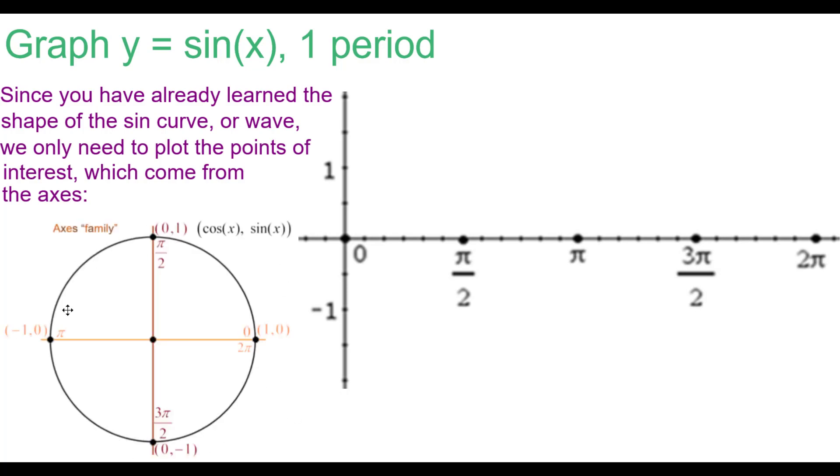Here's the axis family. The sine of 0 is 0, so the ordered pair will plot as 0, 0. The sine of π over 2 is 1, the second coordinate of that point is 1, so π over 2 comma 1.